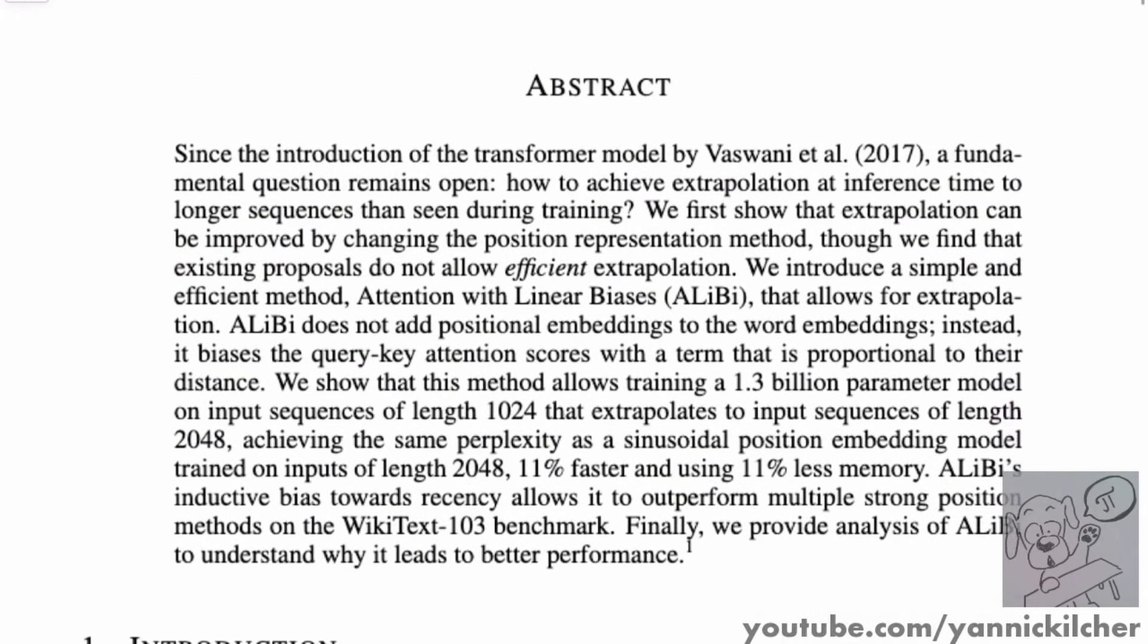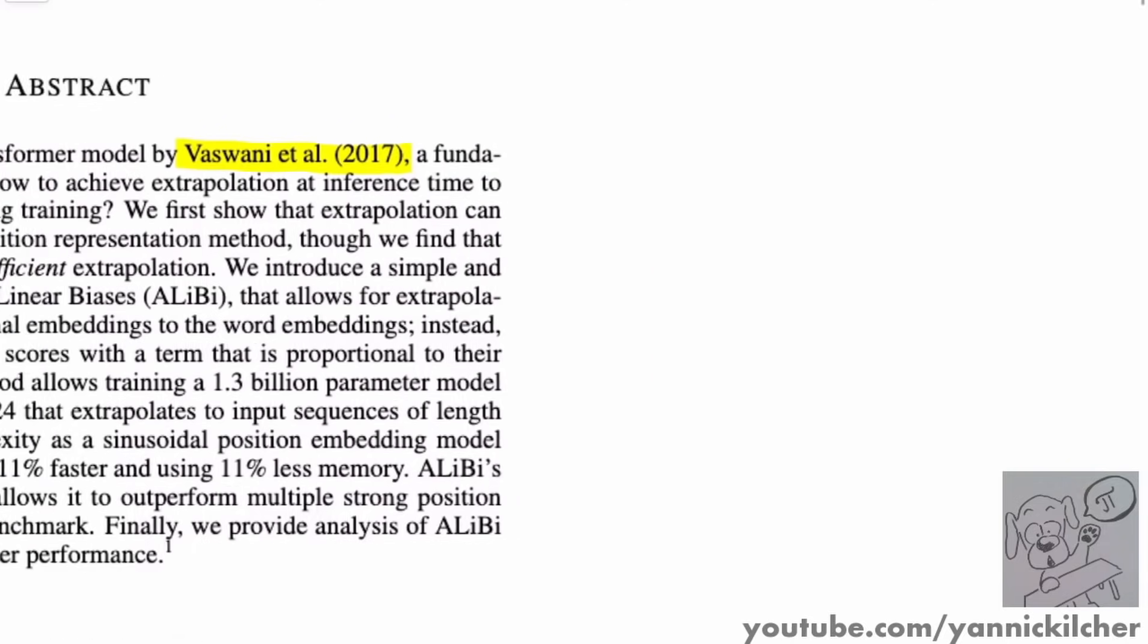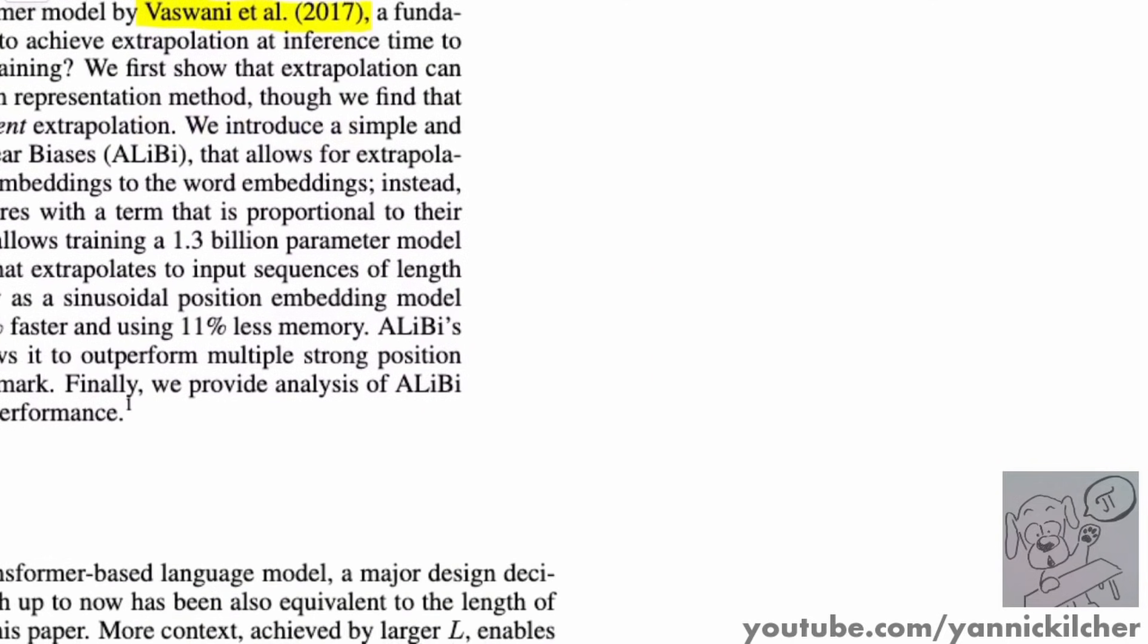So, what's the problem? The problem is position encodings, as we've said. And transformers were released in 2017 by the original attention is all you need paper, and they already dealt with the question of position encodings. Now, why is that? That's because a transformer fundamentally isn't a sequence model per se, it's actually a set model. So, let's say you have a sequence of tokens, and in this paper, we exclusively deal with sort of autoregressive text generation, but there's no actual reason why this is the only case where this should be useful, but that's what we're dealing with.